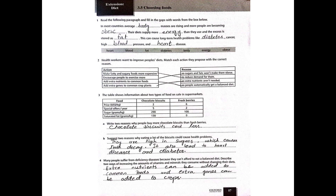The words are: heart, blood, fat, diabetes, body, energy, and obese. In most countries, average body masses are rising and more people are becoming obese. Their diets supply more energy than they use and the excess is stored as fat. This can cause long-term health problems like diabetes, cancer, high blood pressure, and heart disease.